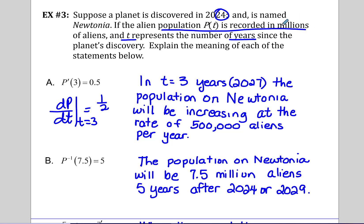Now here's one that's an inverse: P inverse of seven and a half is five. So thinking about the inverse, when we have the population, time is on the x-axis and population's on the y-axis. But now we've flipped that and population is on the x-axis and time is on the y-axis. So this says when the population is seven and a half million aliens, then five years have passed. So that would be the population is seven and a half million in 2029, which is five years after 2024.